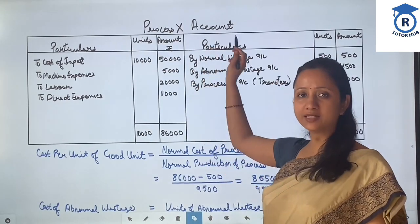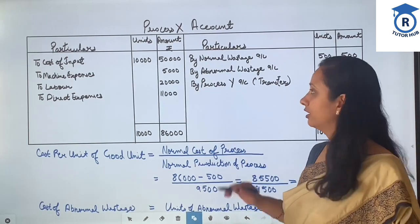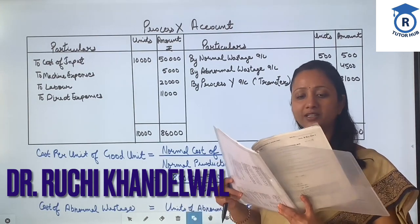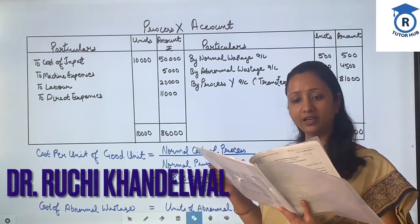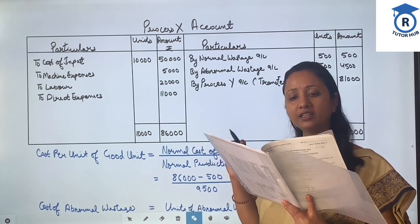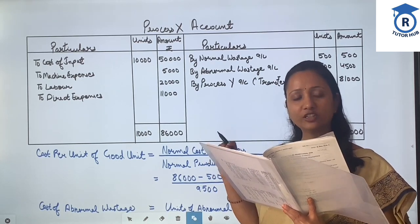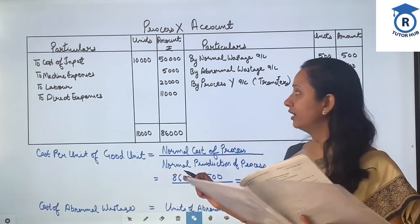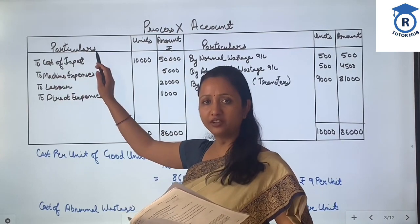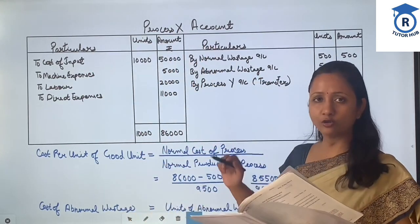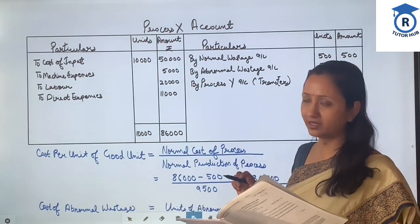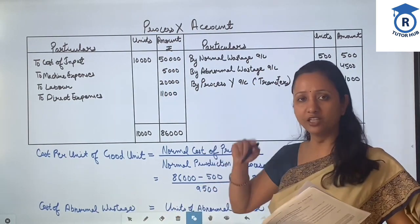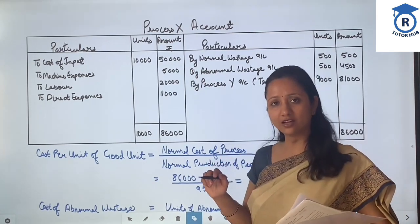First of all, we will make the process account. There are three processes given: Process X, Y, and Z, with related expenses given for each. On top of all, information is given that 10,000 units were introduced. How much value? 50,000 rupees. So first, the cost of input in Process X account, which is our first process, in which 10,000 units have been introduced at 50,000 rupees.